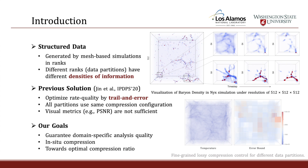For cosmology simulations, and most scientific simulations, there is structured data generated by mesh-based simulations in ranks. Different ranks or partition blocks can have very different densities of information, as visualized in the density figure. Using post-hoc analysis like Halo Finder — which finds high-density areas as halos — some partitions will have more halos than others. Our previous solution used trial and error to find the optimized rate quality, applying the same compression configuration to all partitions.